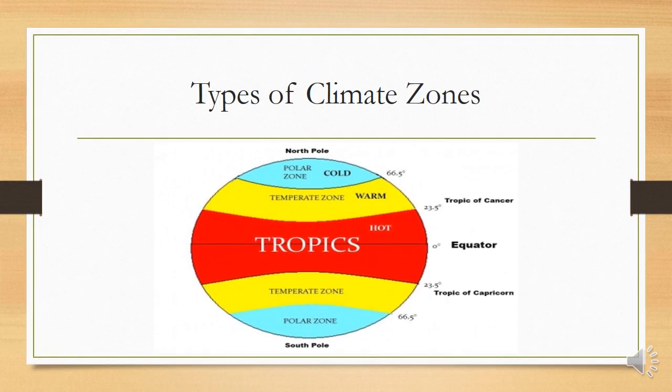Here we have a diagram of our climate zones and we'll continue. The areas in blue represent the polar zone. As I already noted in our previous slide, it's very cold. The areas in yellow, which is the temperate zone, is warm, but the areas in red is very hot and it's called the tropics.